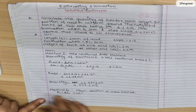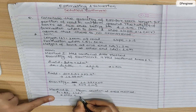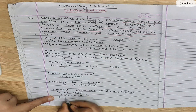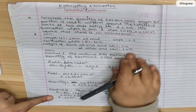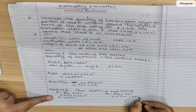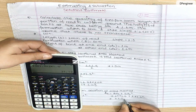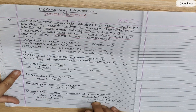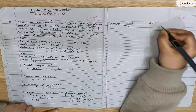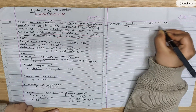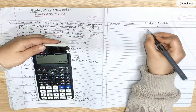A1 equals b into d1 plus s into d1 squared: 10 into 1 plus 2 into 1 squared equals 12 square meters. A2 equals b into d2 plus s into d2 squared: 10 into 1.6 plus 2 into 1.6 squared equals 21.12 square meters. The mean of A1 and A2: A_mean equals (A1 plus A2) divided by 2 equals (12 plus 21.12) divided by 2 equals 16.56 square meters.